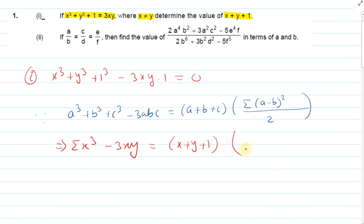Let's write here x² + y² + 1 - x - y - x. So this is zero, which means x equals y equals 1. This is your answer.